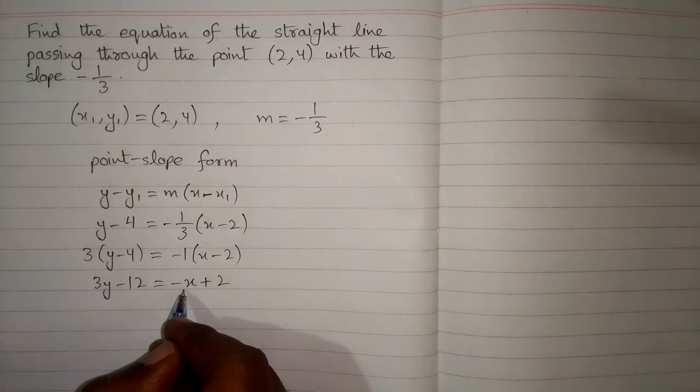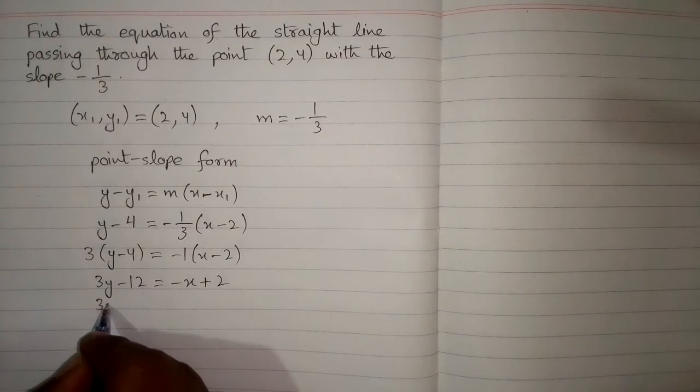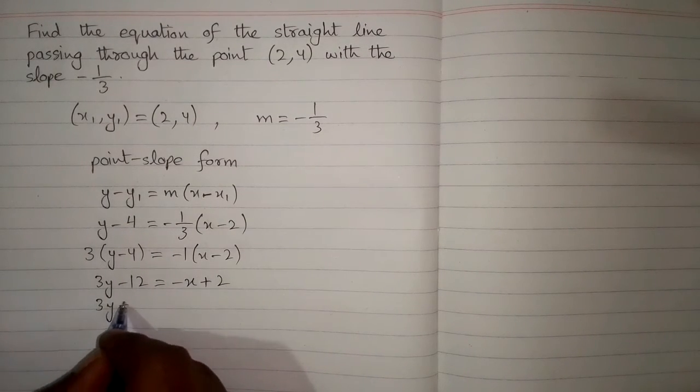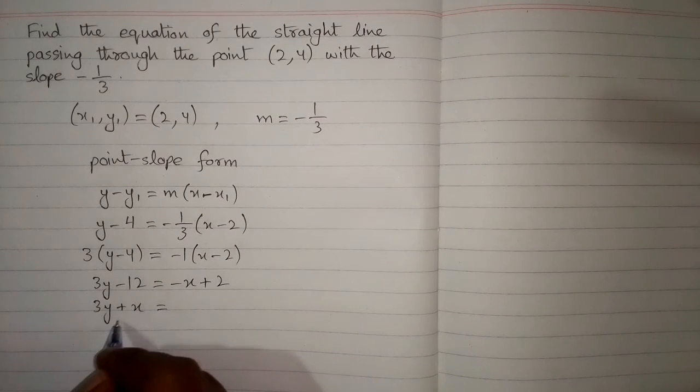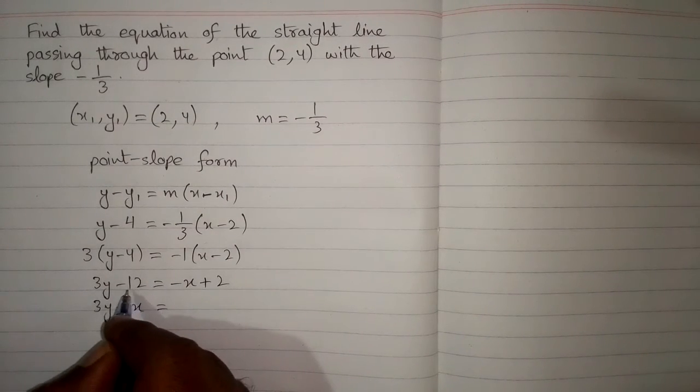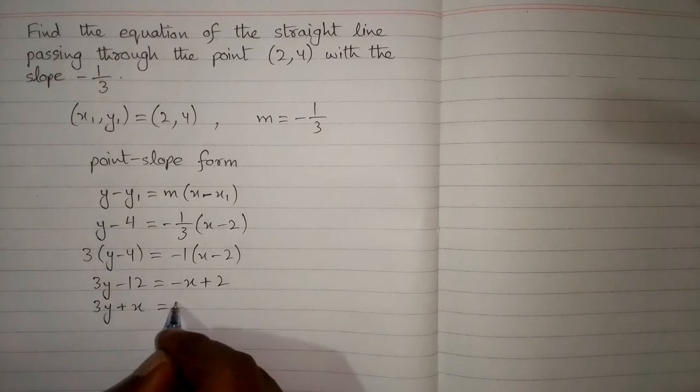Now we can take this minus x on this side of equation, so we have 3y plus x because minus x will become plus x and we will take this minus 12 on this side of equation.